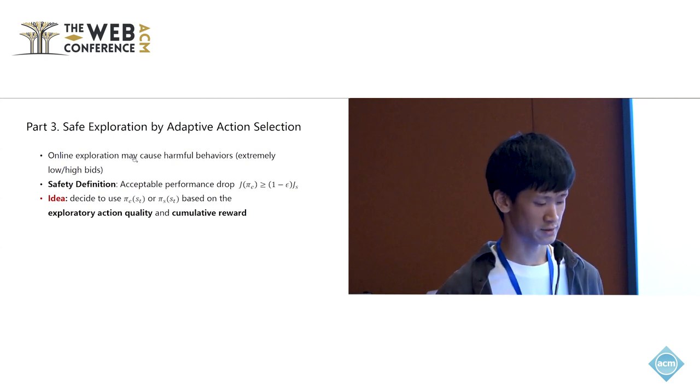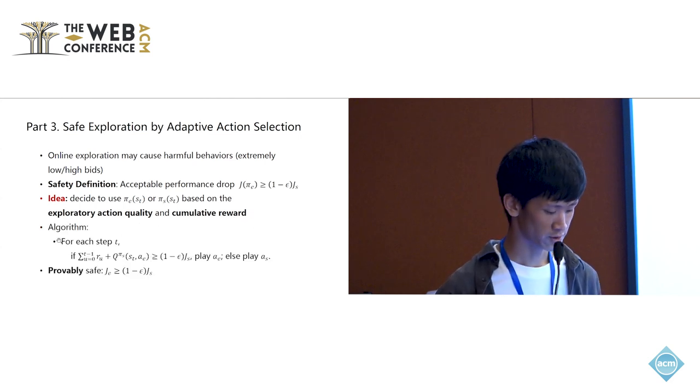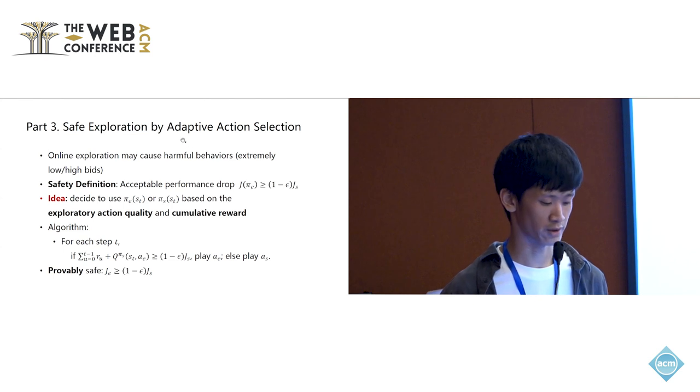The last part of our method is an algorithm for safe exploration. The definition of safety is actually acceptable performance drop, which means that the performance of the exploration policy should not be lower than 1 minus epsilon times the performance of some safe policy. The performance drop should not be higher than epsilon. Our idea to achieve this is for each step, we would decide to use the exploration action or a safe action based on both the quality of the exploration action and the cumulative reward, which is how much reward have we accumulated to this time step. Our algorithm will check this condition for each step. This is what we call adaptive action selection. And actually, our algorithm is proved to be safe. We can theoretically show that this definition of safety is always guaranteed.